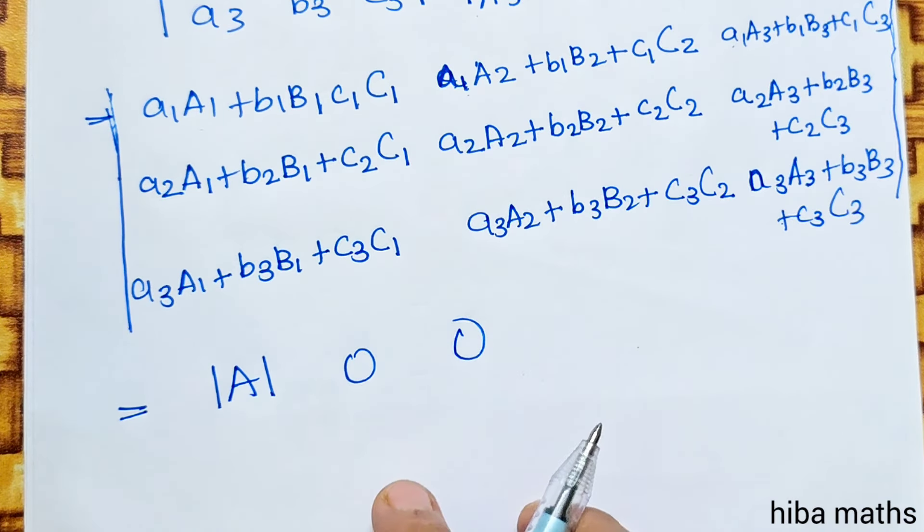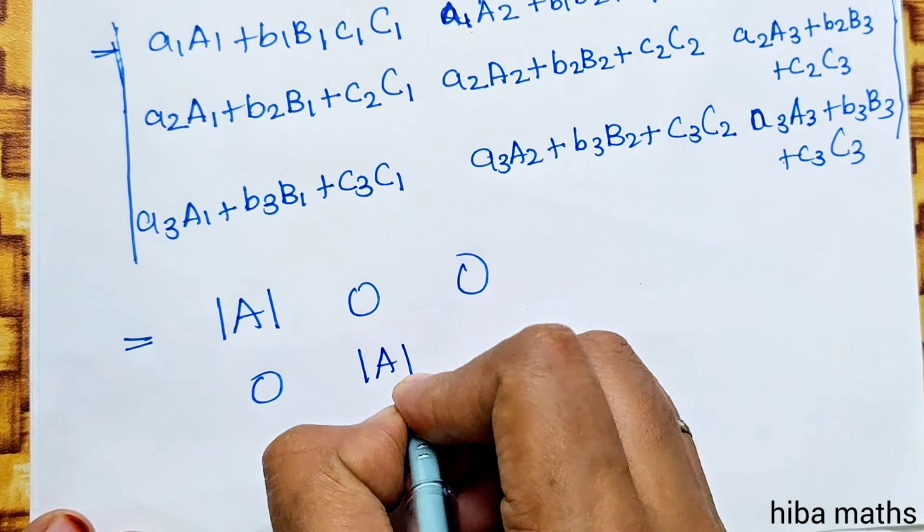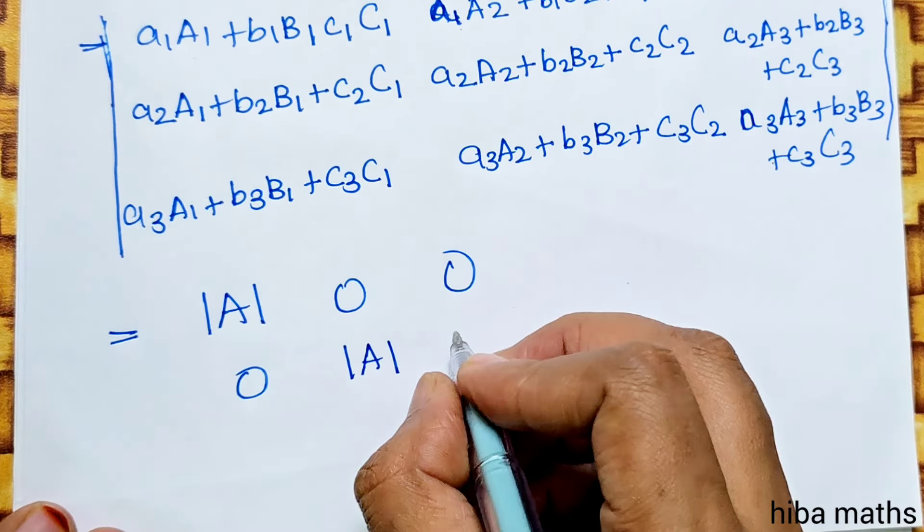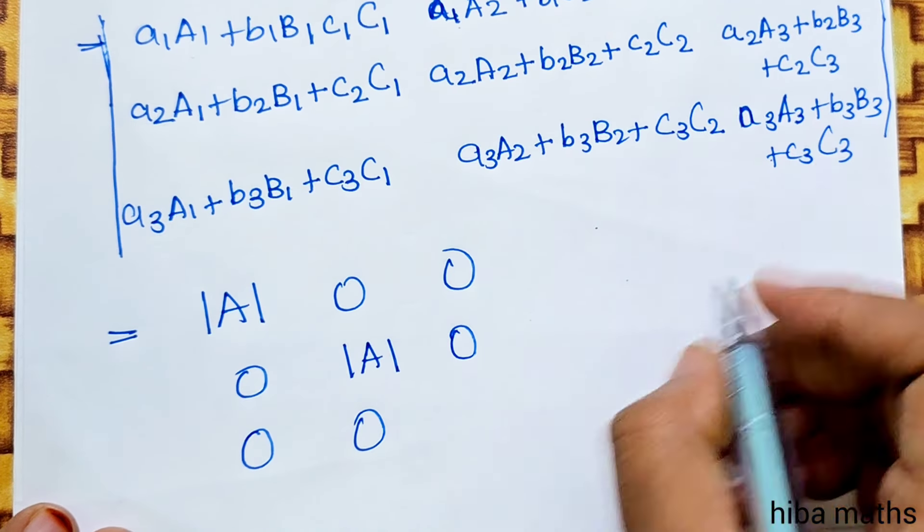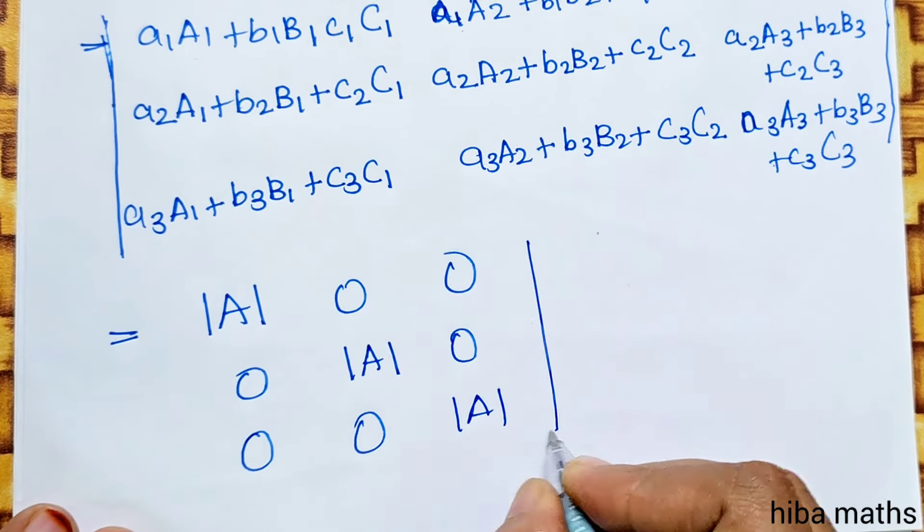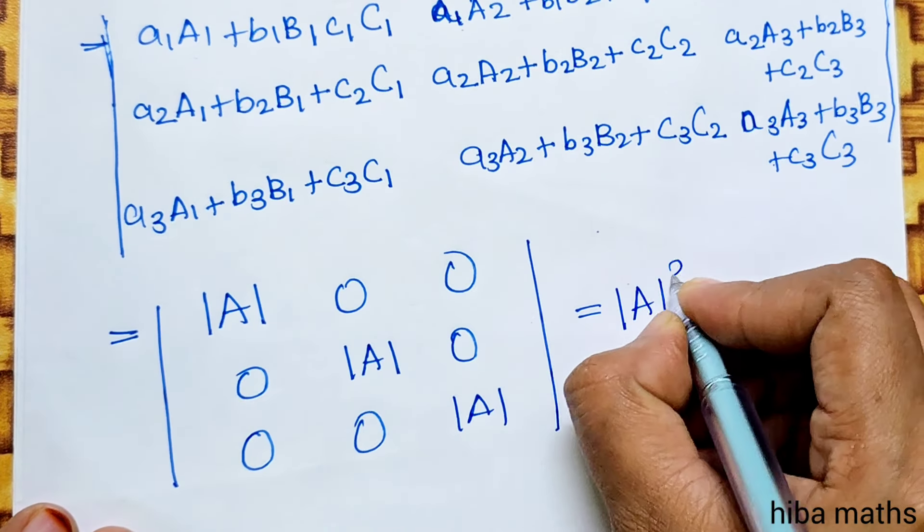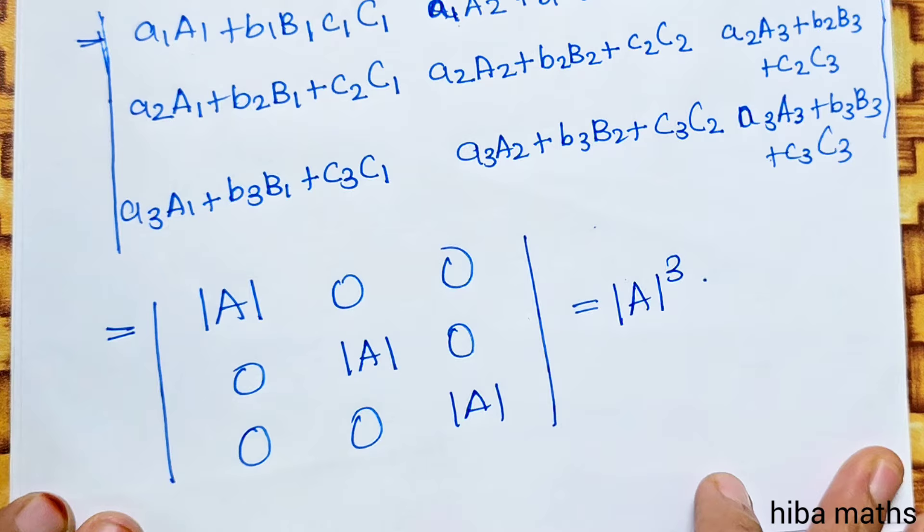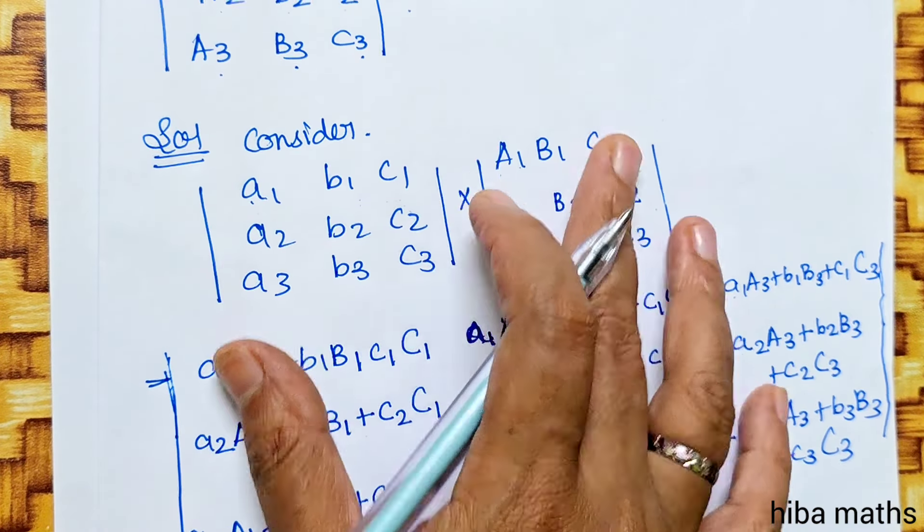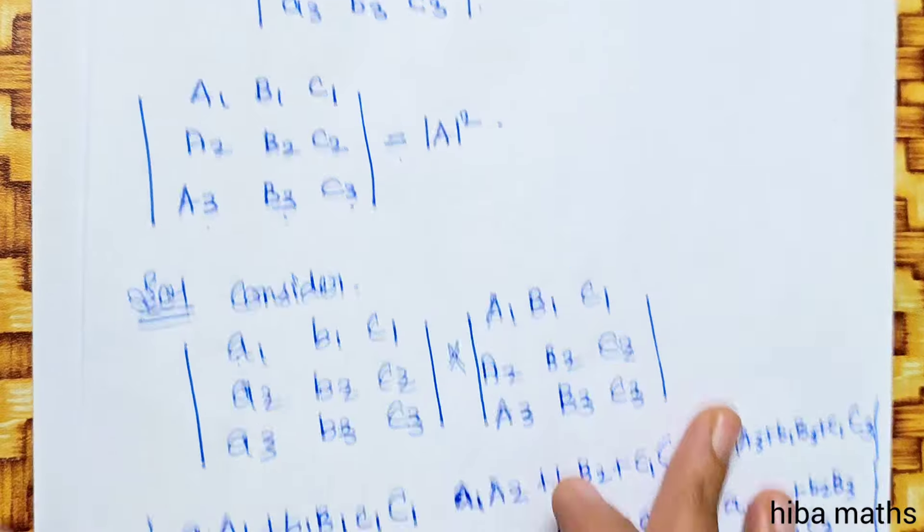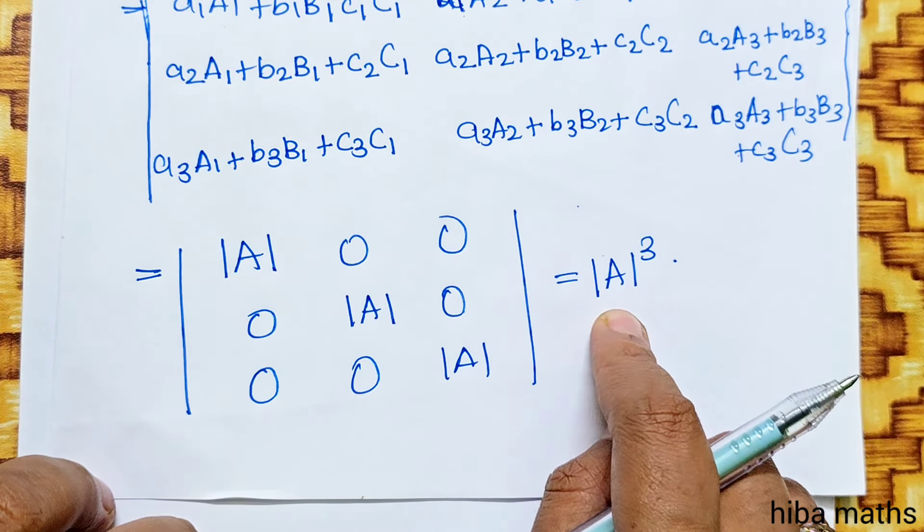Now we can simplify. For the diagonal elements, we get modulus of A. For off-diagonal elements like 1,2 and 1,3, these equal zero by cofactor properties. Similarly 2,1 equals 0, 2,3 equals 0, 3,1 equals 0, 3,2 equals 0. For diagonal 3,3 we get modulus of A.